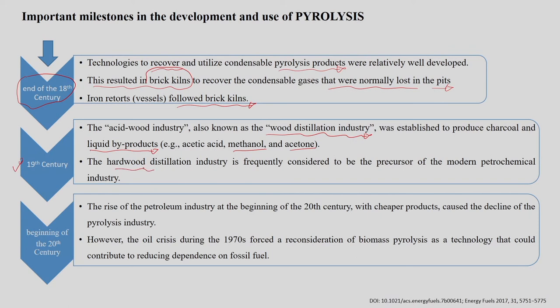The rise of the petroleum industry at the beginning of the 20th century, with the availability of cheaper products from the petrochemical industry, caused the decline of the pyrolysis industry. However, the oil crisis during the 1970s forced a reconsideration of biomass pyrolysis as a technology that could contribute to reducing dependence on fossil fuels, and this is how the development of the pyrolysis process progressed in science and technology.